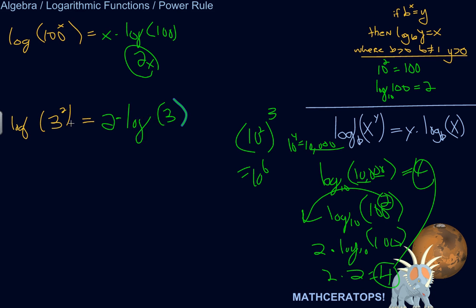It goes the other way, too. You might have a situation where it's like 3 times log of base 4 of x. Maybe it's easier to call this log base 4 of x to the 3rd for some reason. So it goes both ways, of course, which is what the equal sign is saying.